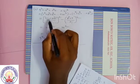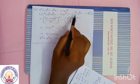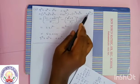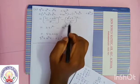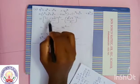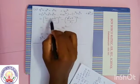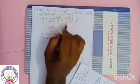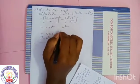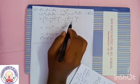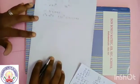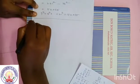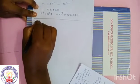Therefore 9 cube plus 10 cube plus dot dot dot plus 21 cube is equal to 52065.